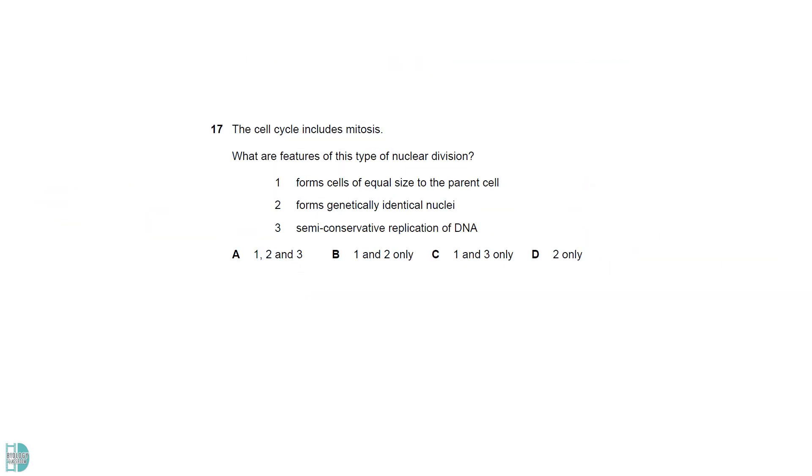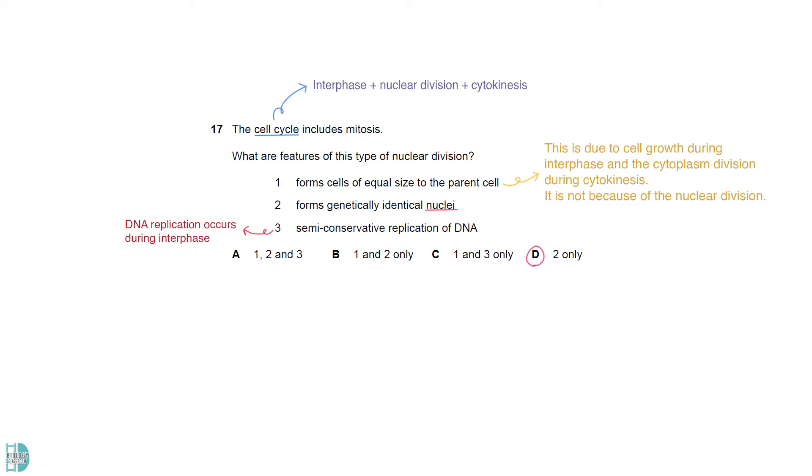A cell cycle is composed of the interphase, nuclear division and cytokinesis. One is due to the growth of the cell during interphase and the division of cytoplasm in cytokinesis. Three occurs during interphase. Only two is the feature of mitosis.